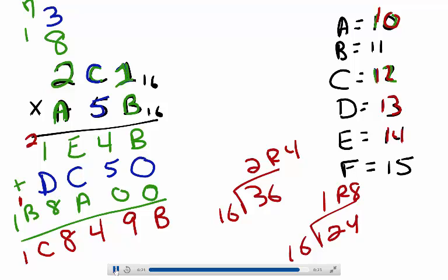So now I know that 2C1 times A5B in base 16 equals 1C849B.